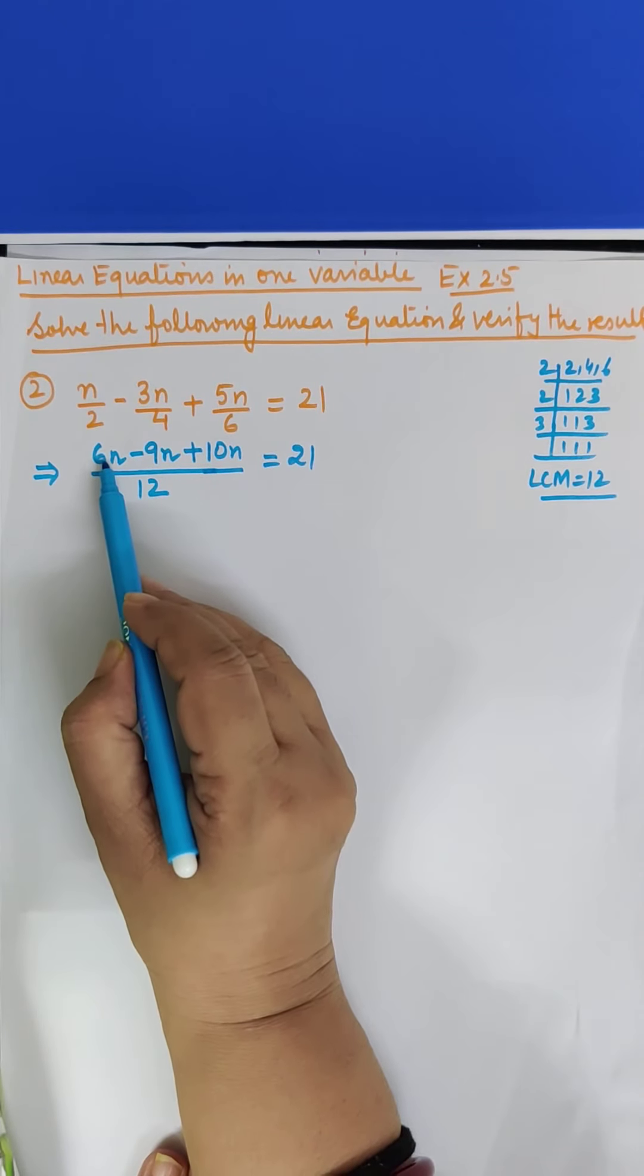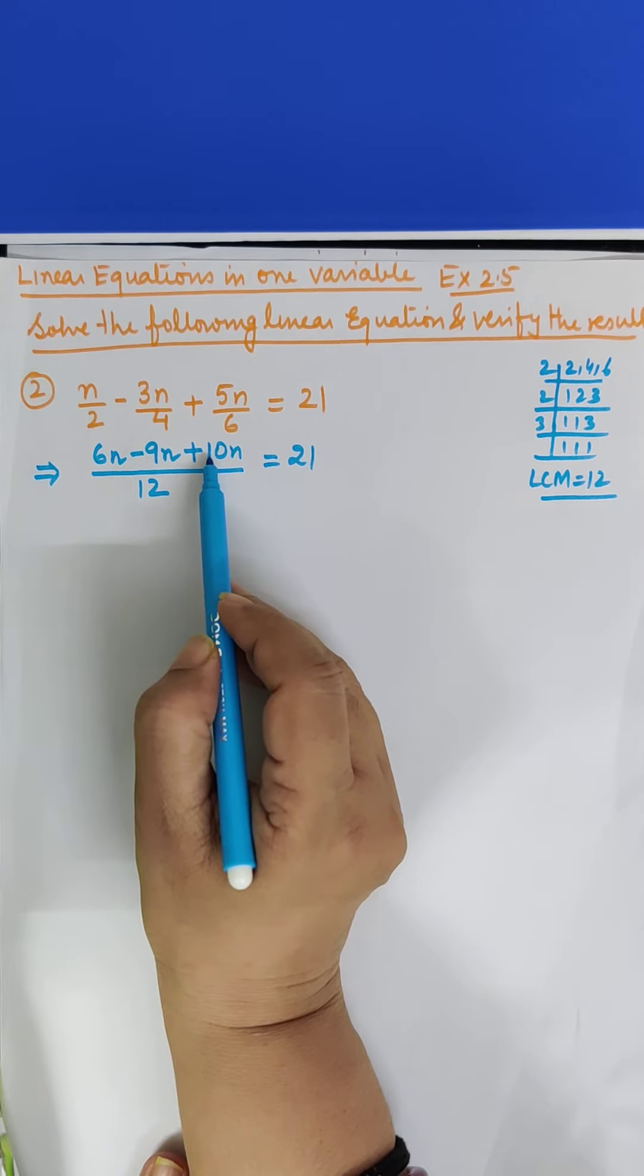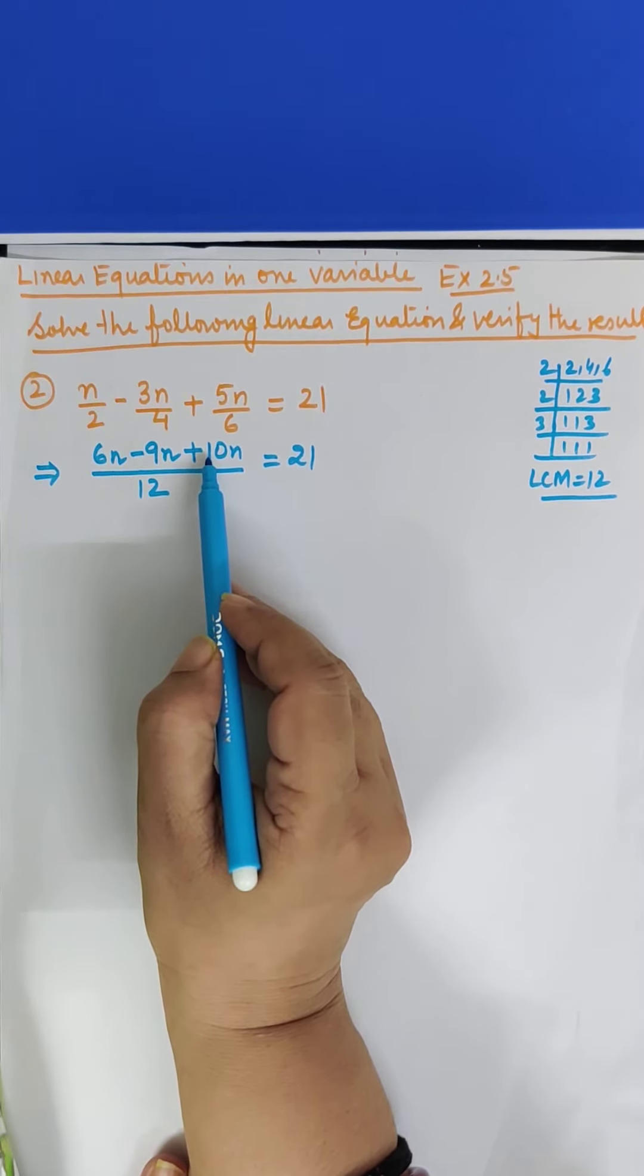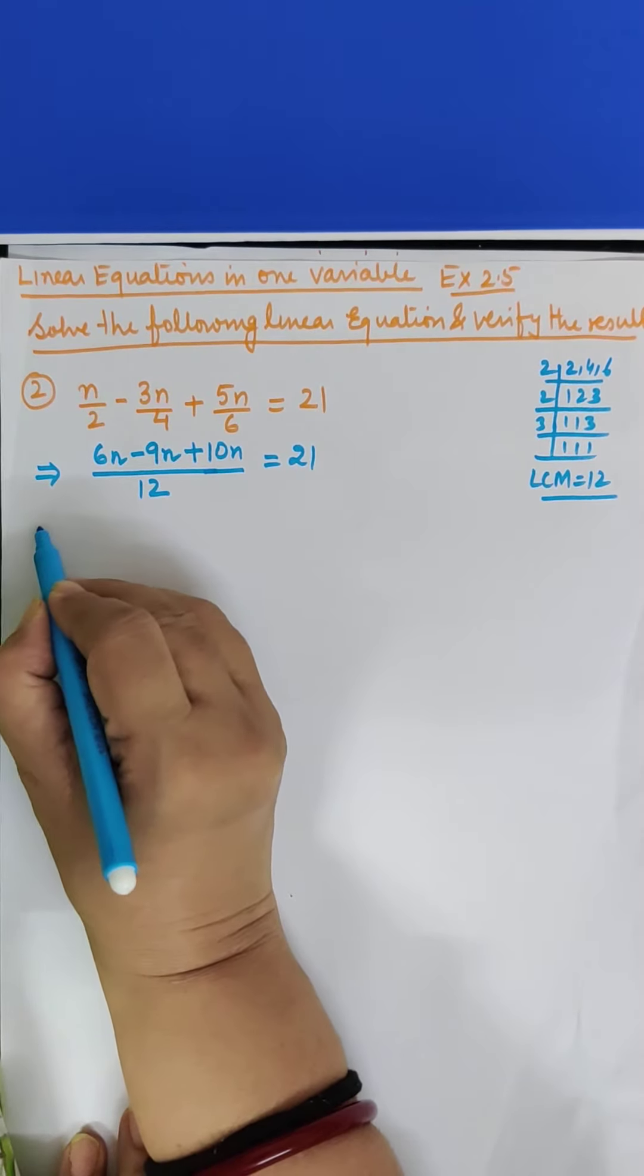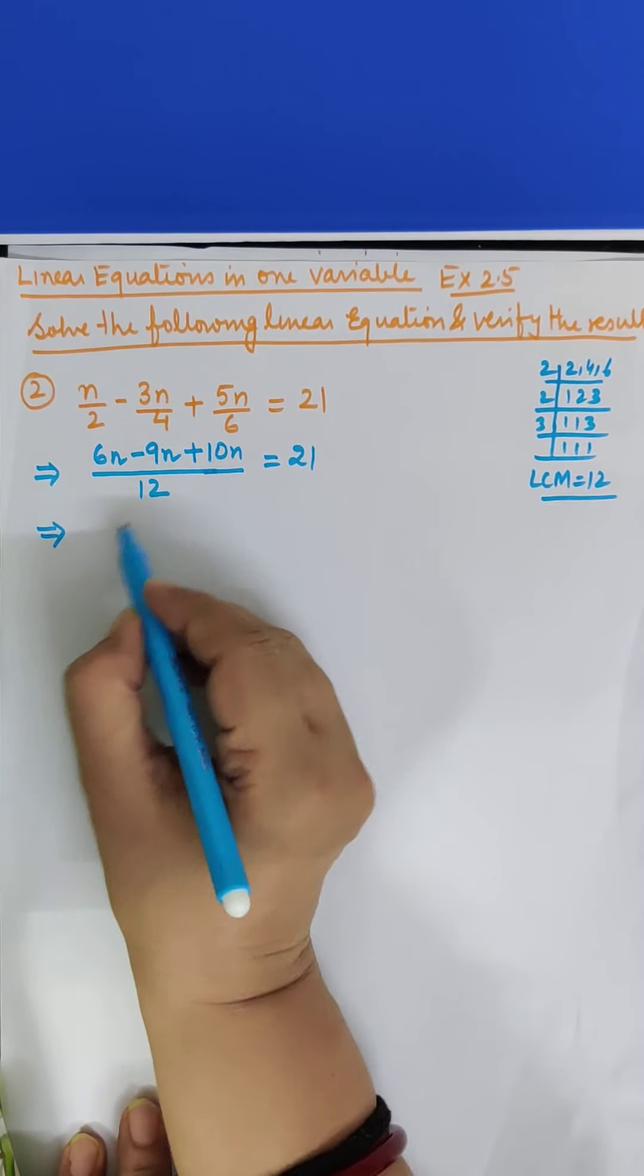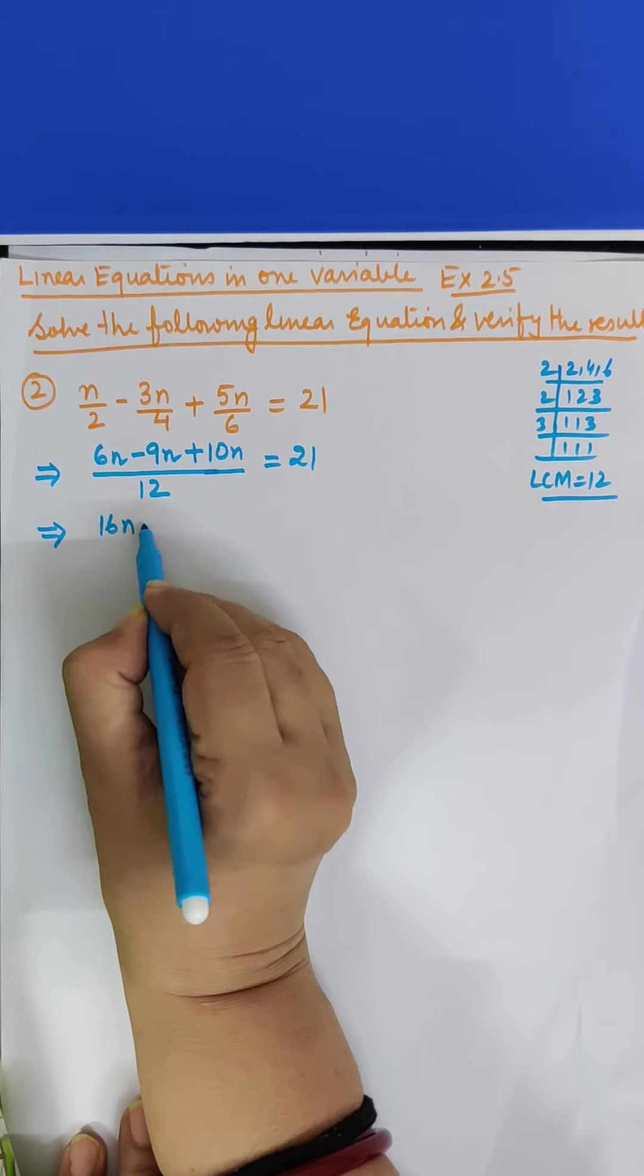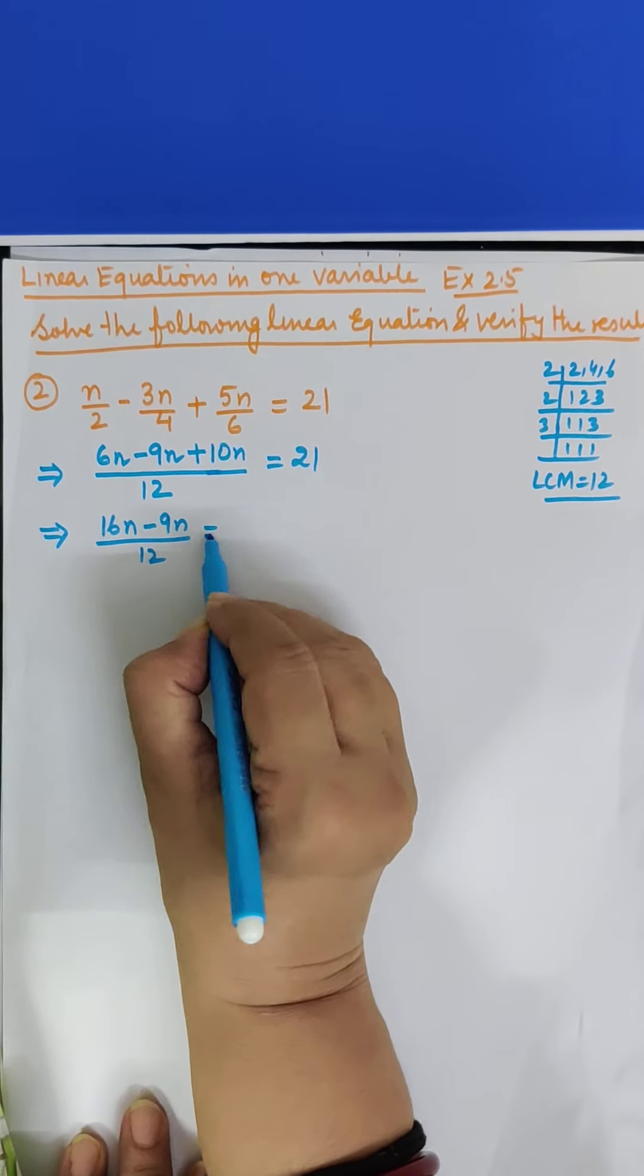Now look at this. 6N plus 10N, how much? 16N. And 16N minus 9N, how much? 7N. So we'll do this in two steps. In the first step we do it like this: 6N plus 10N is 16N minus 9N upon 12 equal to 21.